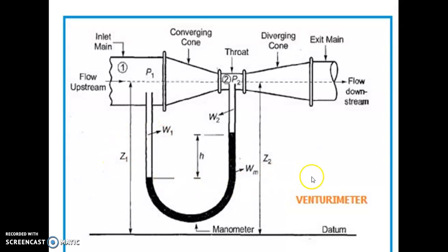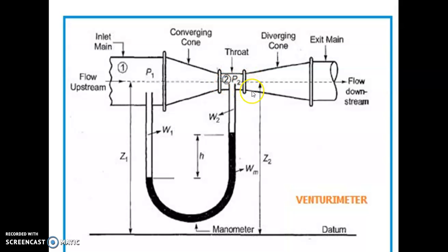Venturi meter consists of a converging pipe, a throat section, and a diverging cone. In the throat, area will be minimum, velocity will be maximum, and pressure will be minimum.